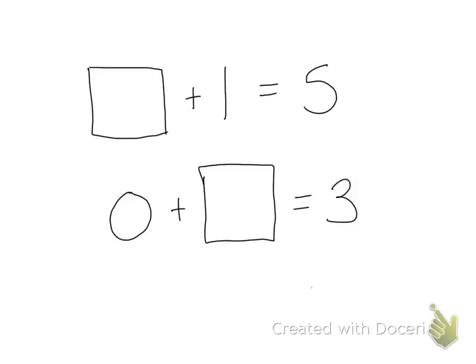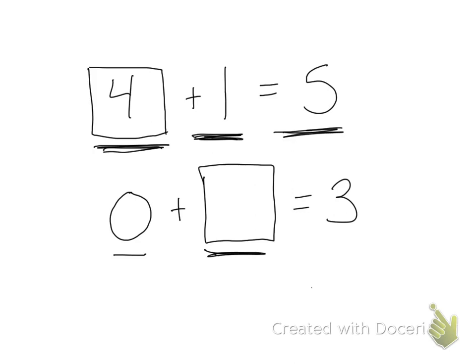Well, what happens if we have a missing addend? I have a missing number — this is saying that something plus one equals five. So if we think about it, it should be four plus one is five, because we know when we add one, the answer we get is the next counting number. What about this one? Zero plus something equals three. I've learned today that if I add zero to any number it's always the same number, so my missing addend has to be three because zero plus three equals three.